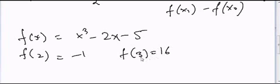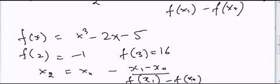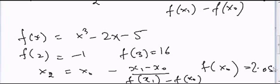So we can write this equation and solve for x2. So x2 is equal to x0 minus [x1 minus x0] divided by [f of x1 minus f of x0] times f of x0, and that will be equal to 2.0588.